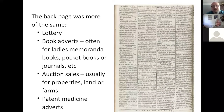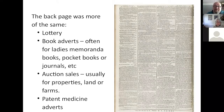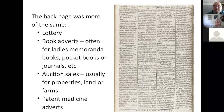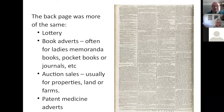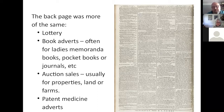The back page had more of the same. It nearly always included a lottery — lotteries were quite a big business back then. Then book adverts — oddly it often seems to be for ladies' memo books, pocketbooks, or journals. On this particular newspaper, virtually the middle section is all book adverts for ladies' memorandum books. Then auction sales, usually for properties, land, or farms, and some more patent medicine adverts.